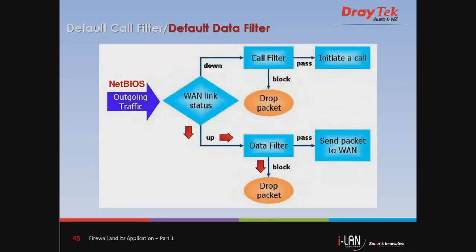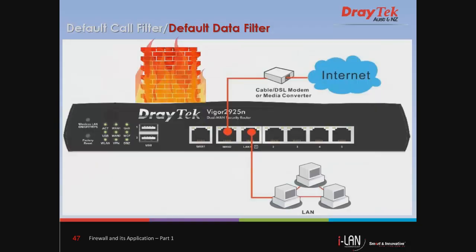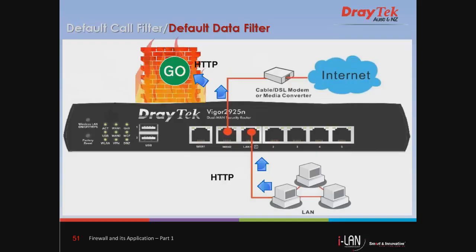When there is an existing internet connection, the data filter is applied to incoming and outgoing traffic. It checks packets according to the filter rules — if illegal, the packet will be dropped by the router; if legal, the packet will pass. In the network diagram scenario using the Vigor2925 router, when one of the computers in the LAN sends NetBIOS traffic out to the WAN, the data filter is applied and will stop the packet. But when permitted traffic like HTTP protocol comes from one of the computers in the LAN, the data filter will pass the packets.